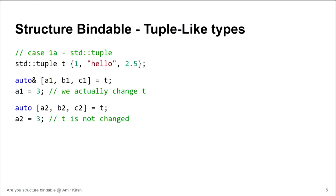Let's see a piece of code. For tuple-like types, suppose we have a tuple — this tuple doesn't state the types, so most probably we are in C++17 using class template argument deduction. We create a tuple and we want to extract a, b, c from it. As a reference, if we take a1, b1, c1 by reference, changing one of them changes the actual tuple. If we take them by value — a2, b2, c2 — changing a2 does not change t.